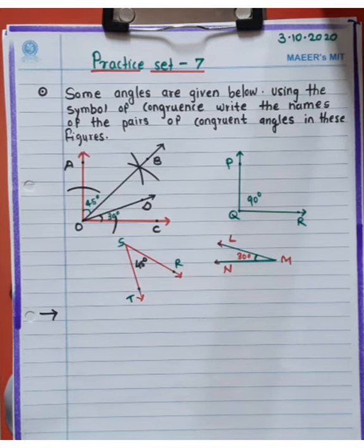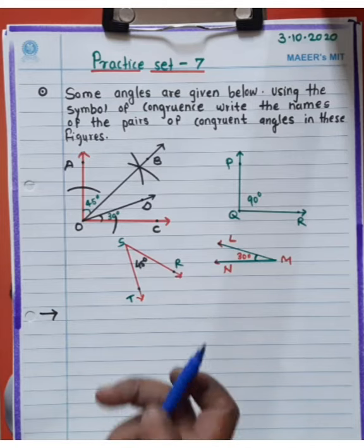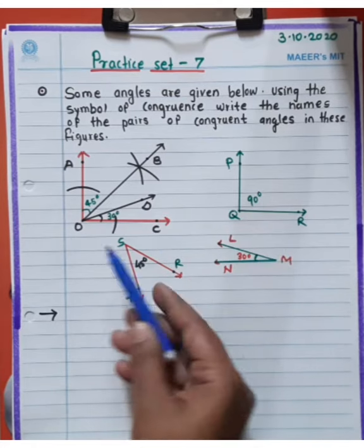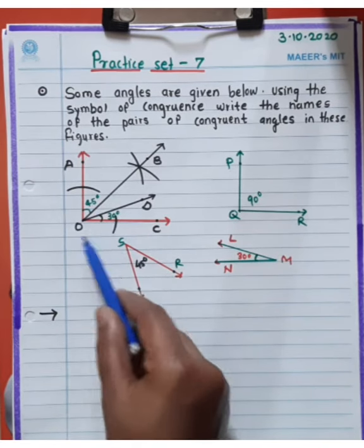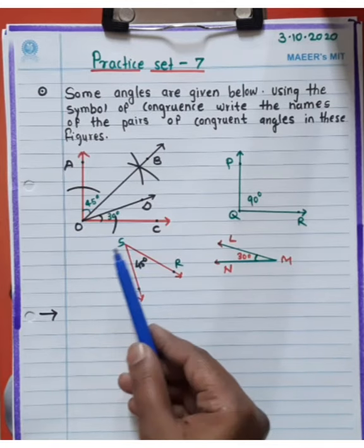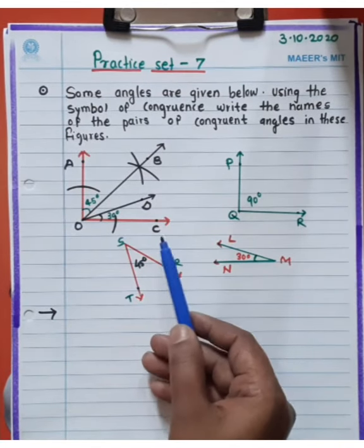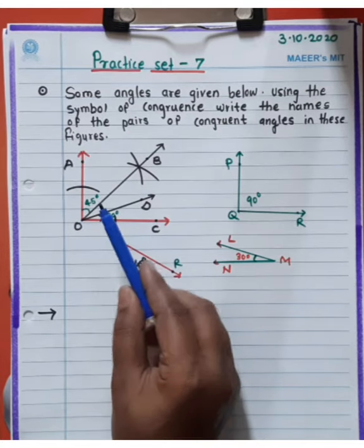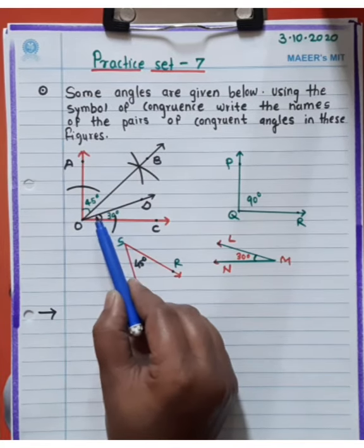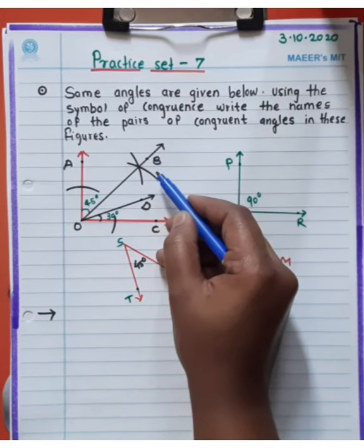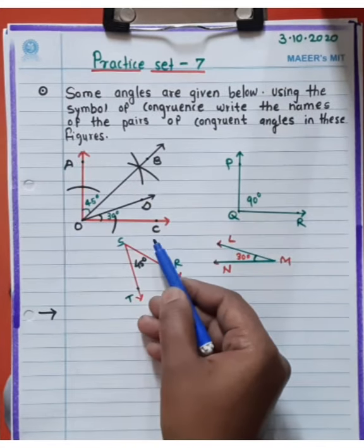First, look at this first figure. In this figure, angle AOB is equal to 45 degrees. And angle BOC is equal to also 45 degrees. But note: 45 degrees is not written here because OB is the bisector of angle AOC — OB is the angle bisector.